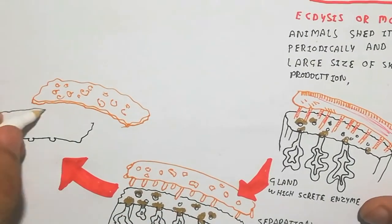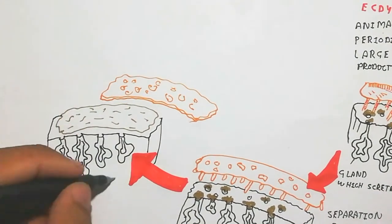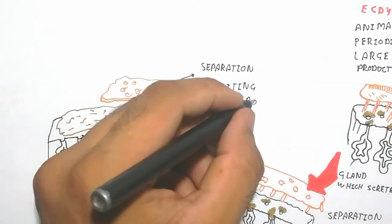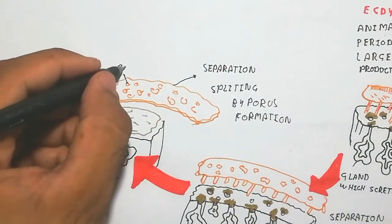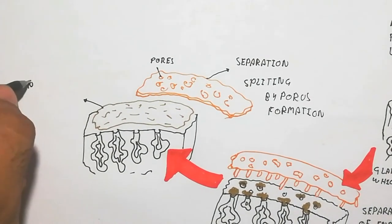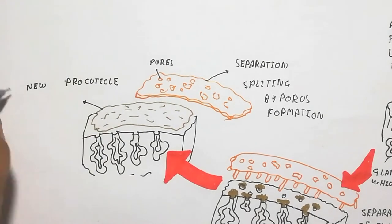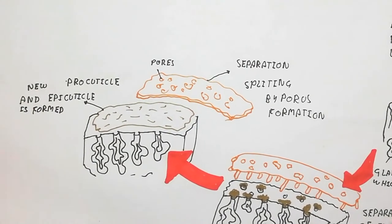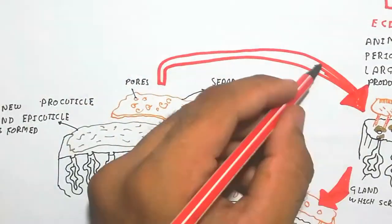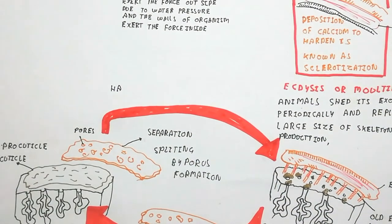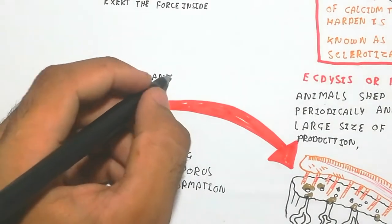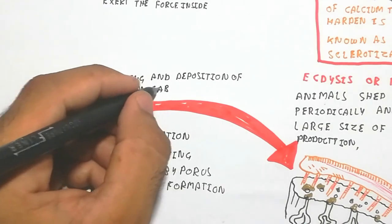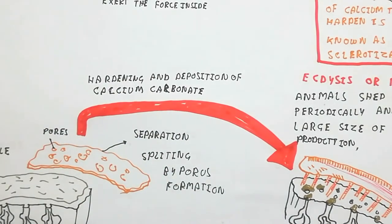After separation, a new layer is formed — the new epicuticle — which further forms into the exoskeleton by deposition of calcium carbonate and other hardening mechanisms. The main point is that the new exoskeleton is formed larger than the previous one to accommodate growth. This is why the exoskeleton is shed periodically.